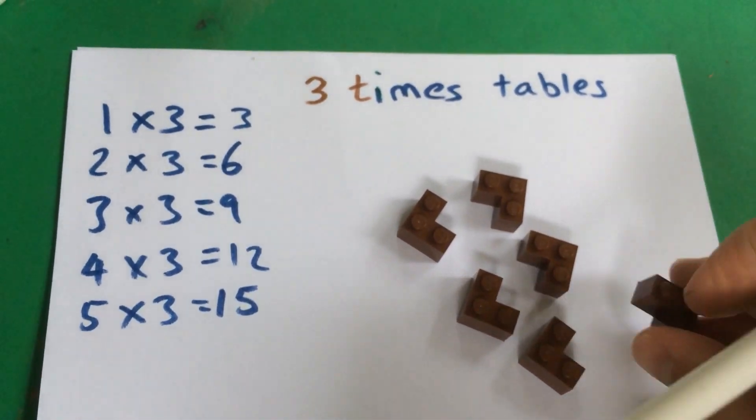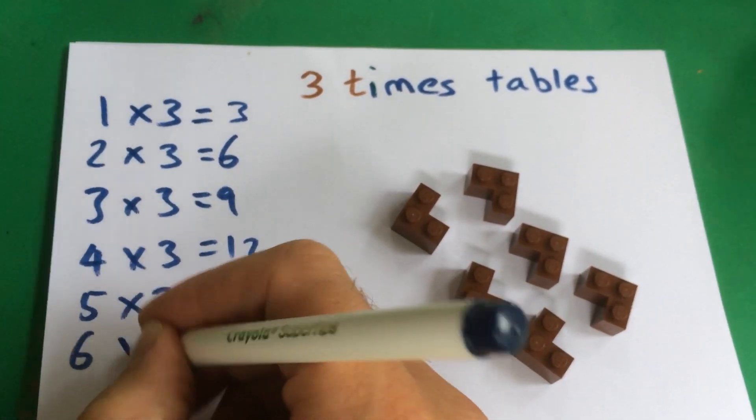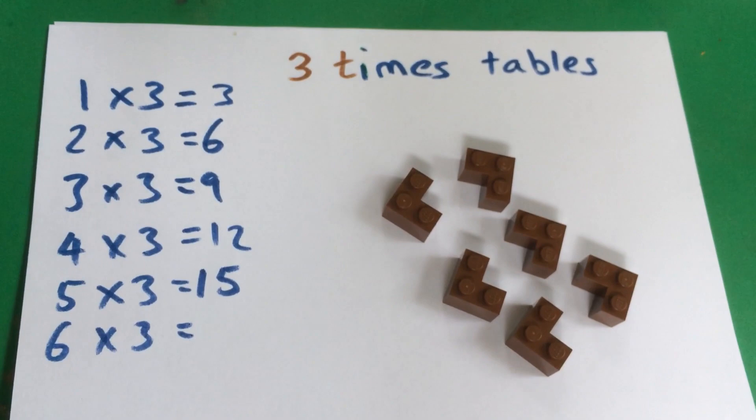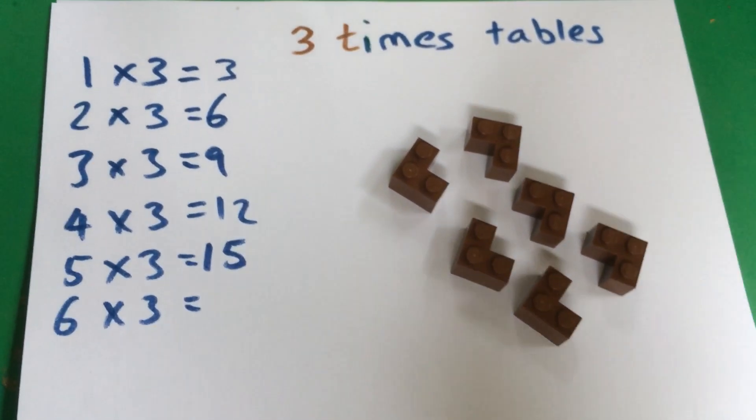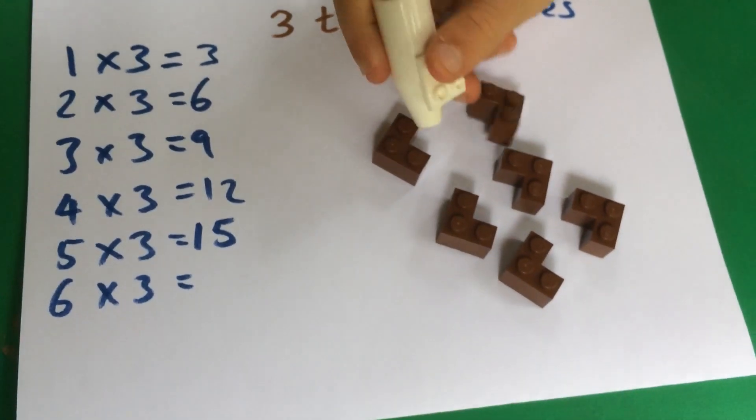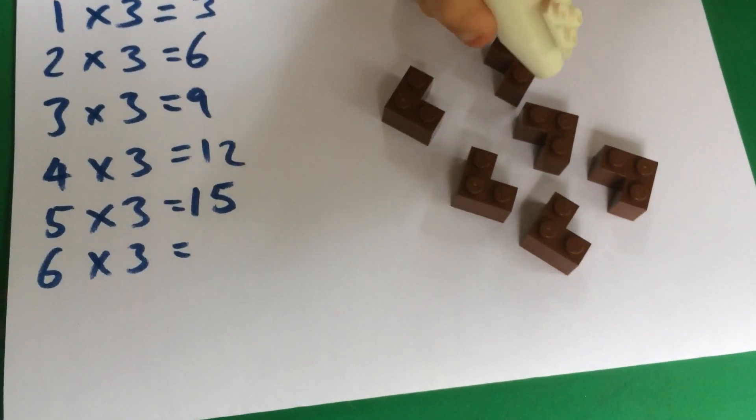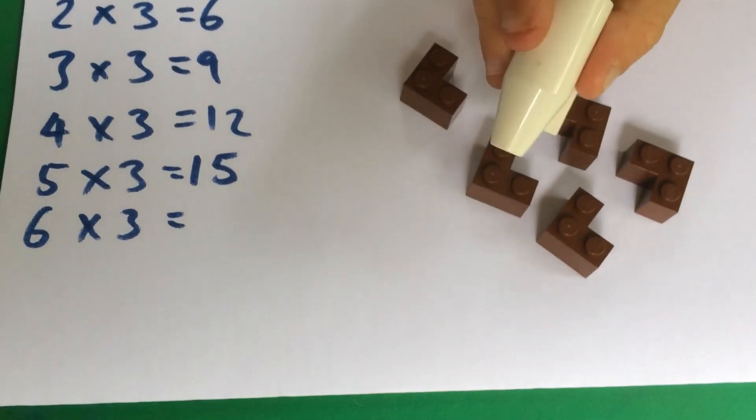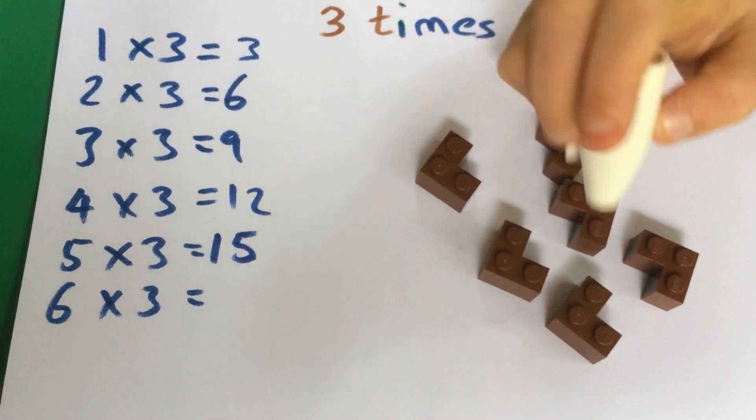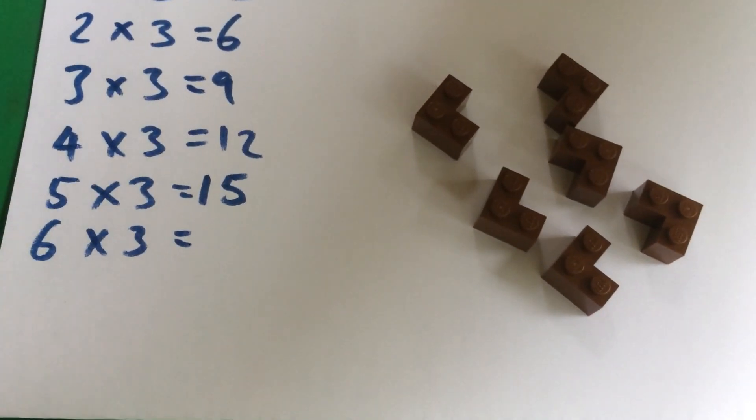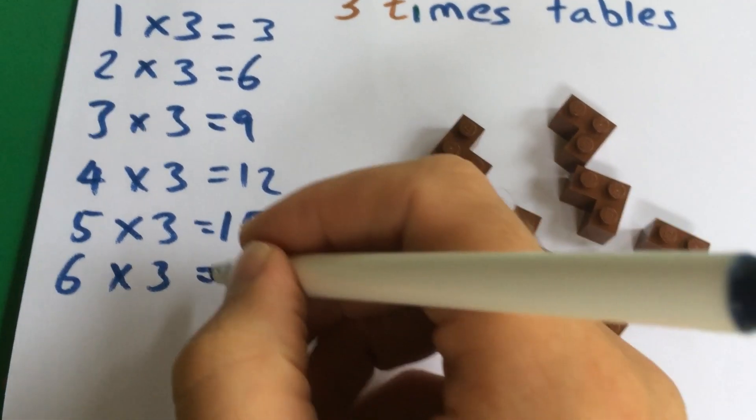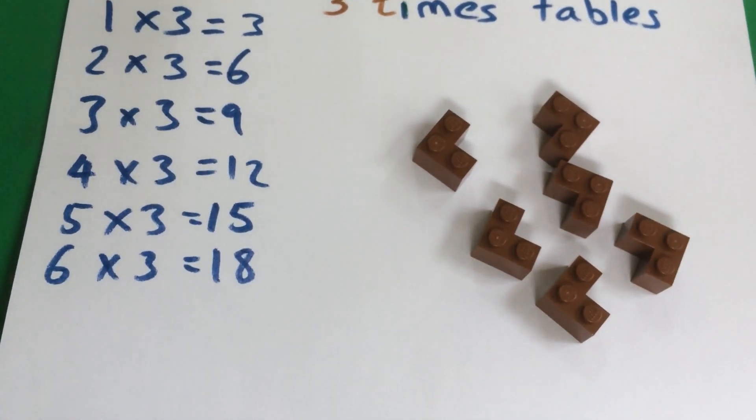You can count them out loud if you want. Six lots of three. Eight. How many is six lots of three? Do you want to count that up? One, two, three, four, five, six, eight, nine, nine, fifteen, sixteen, eighteen. Eighteen. We could keep going.